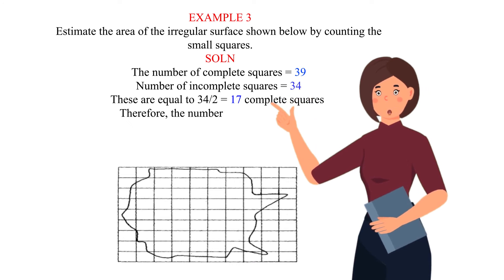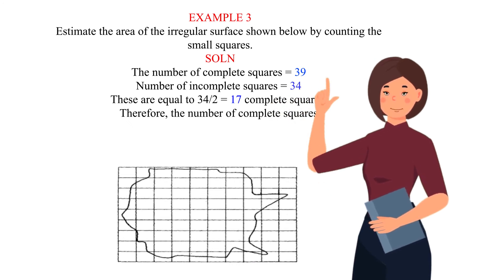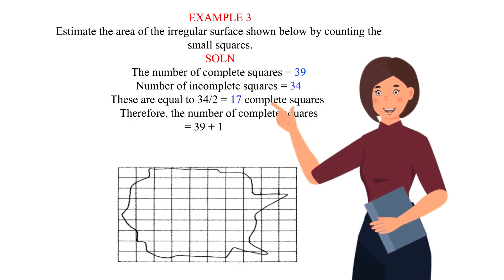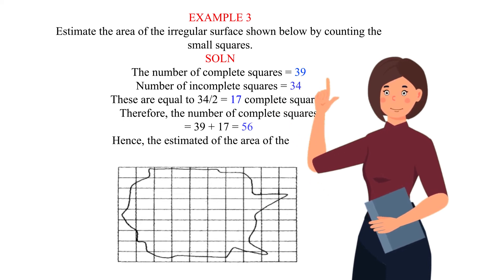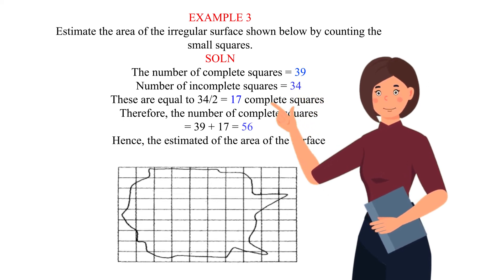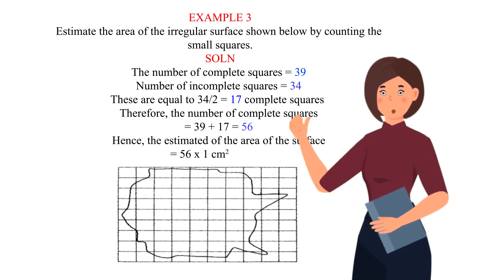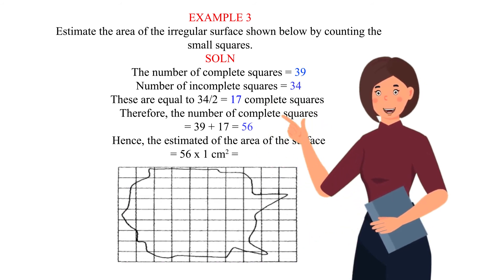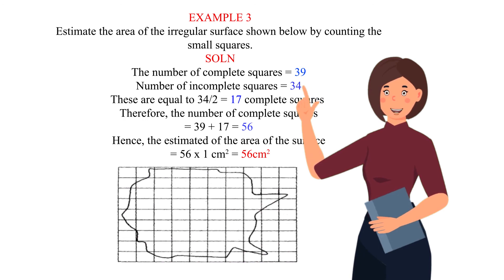Therefore, the total number of complete squares equals 39 plus 17 equals 56. Hence, the estimated area of the surface equals 56 times 1 square centimeter equals 56 square centimeters.